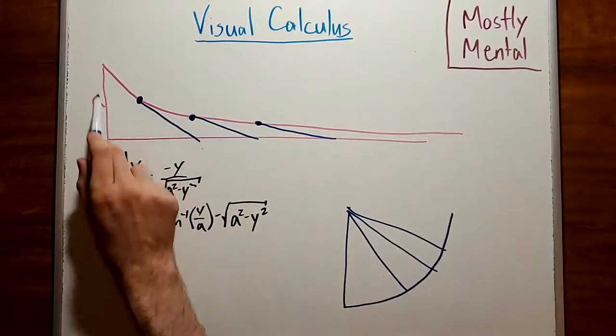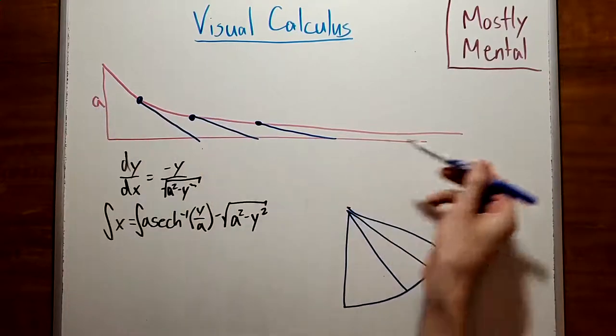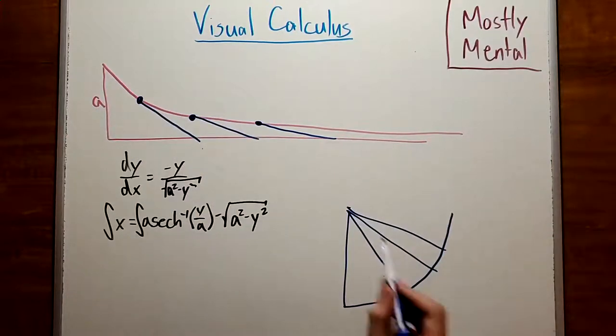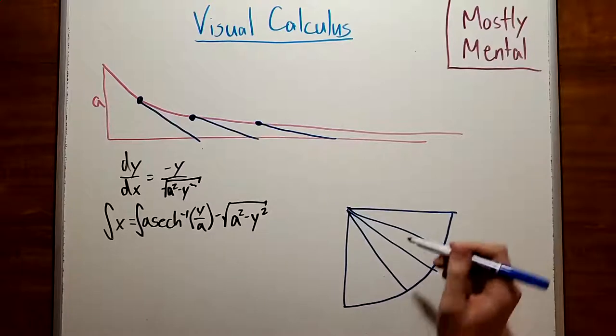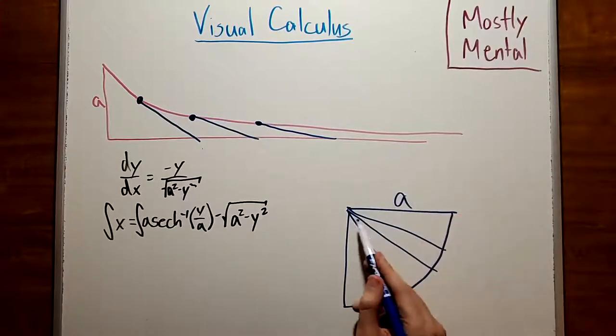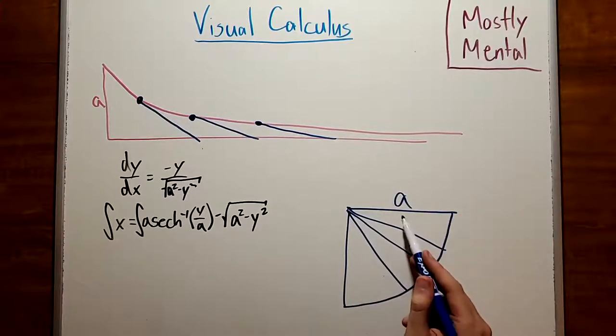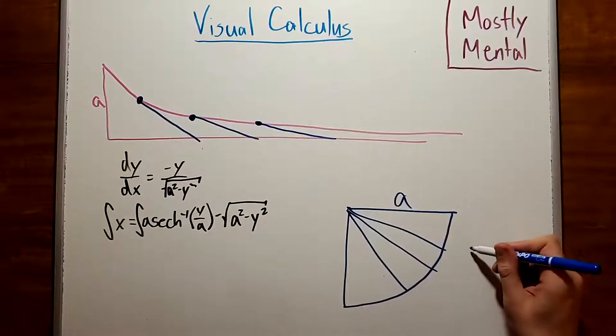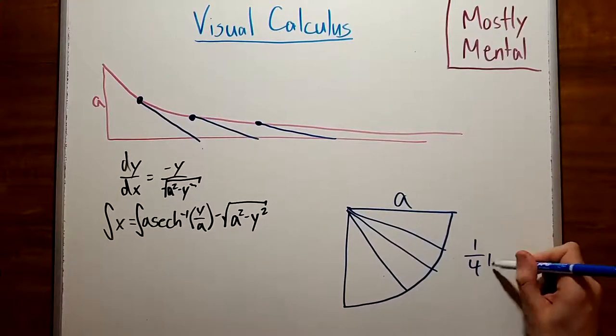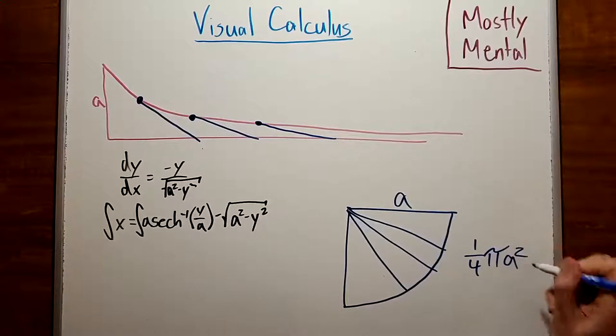And it goes from vertical down to horizontal in the limit. So we end up with a quarter circle whose radius is the length of a string. In other words, the area is going to be one-fourth π a squared.